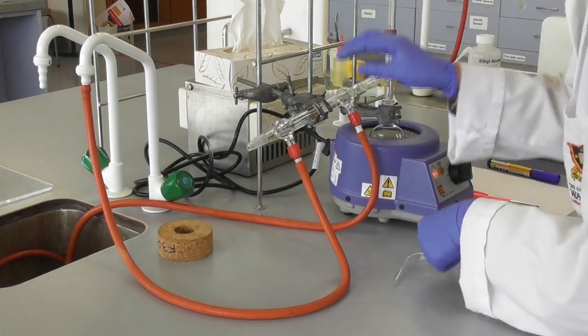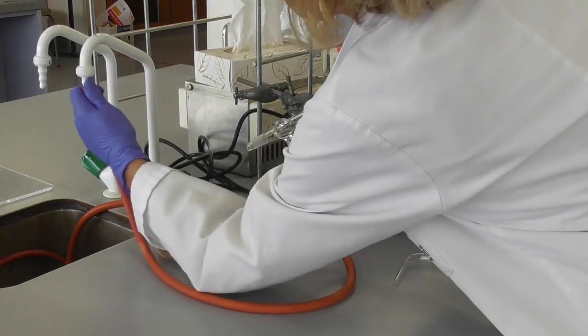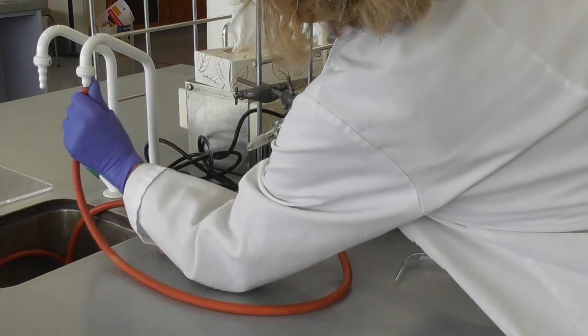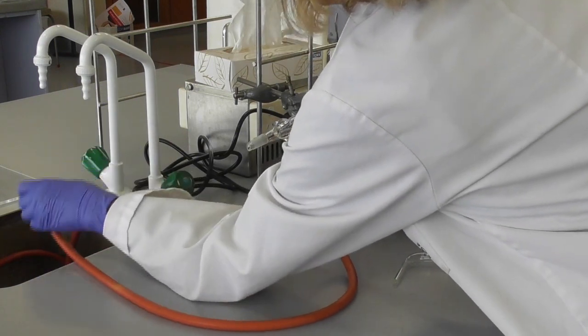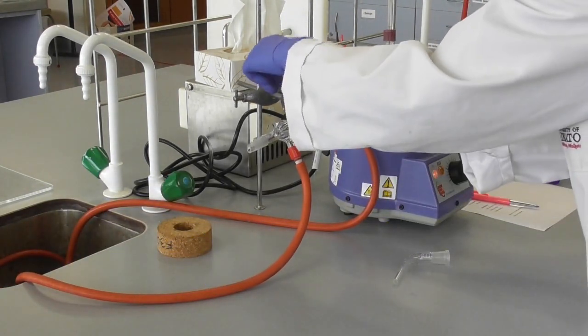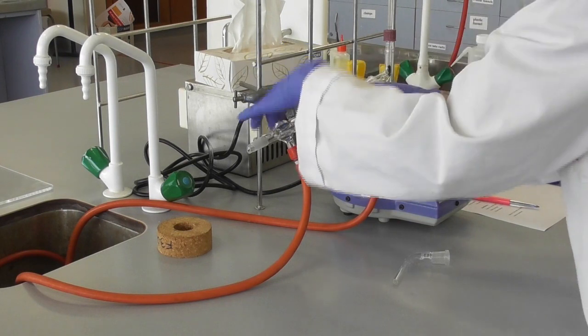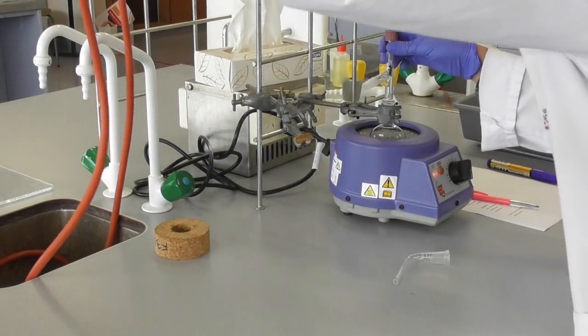We disassemble the apparatus by turning off the water, taking the outlet piece off the end and removing the hoses from the tap. Now we can drain the condenser and take the rest of the apparatus apart.